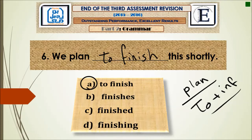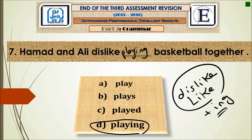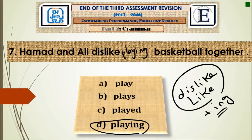Question number seven: 'Hamad and Ali dislike ___ basketball together.' Dislike is a verb that must be followed by ing — the gerund form. Like and dislike are followed by ing when talking in general. So the answer is playing: 'Hamad and Ali dislike playing basketball together.'